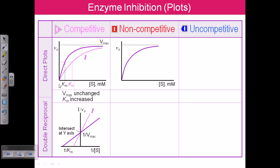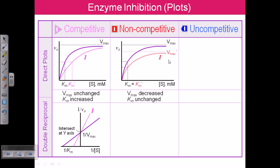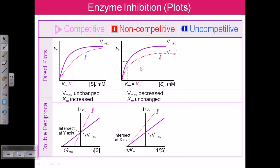For non-competitive inhibition, this is the normal curve. When we add the inhibitor, the Km remains unchanged — so there is no change in affinity — but the Vmax is decreased. The maximum velocity is decreased, so the enzyme can never achieve the same maximum velocity it could without the inhibitor.